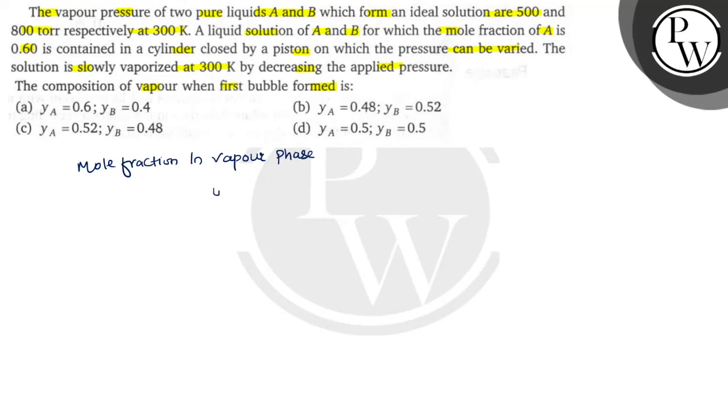To yeh hota hai y_a equals to p_a not x_a upon p_a not x_a plus p_b not x_b. To yahan par aap formula lagaoge, p_a not ke value aapko question mein given hai 500.